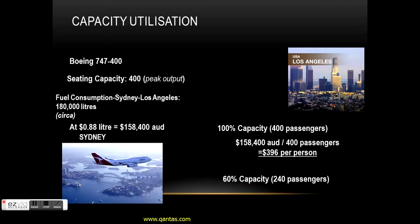However, if only 240 passengers arrive - that's 60% of capacity - we still have essentially the same fuel bill. We then have to spread that cost over just 240 passengers, meaning each pays $660 per person. In effect, those 240 passengers are paying for 400 seats. That's why you might think you're on a winner when you get to stretch out with no one next to you - the fact is, you're paying for it anyway.